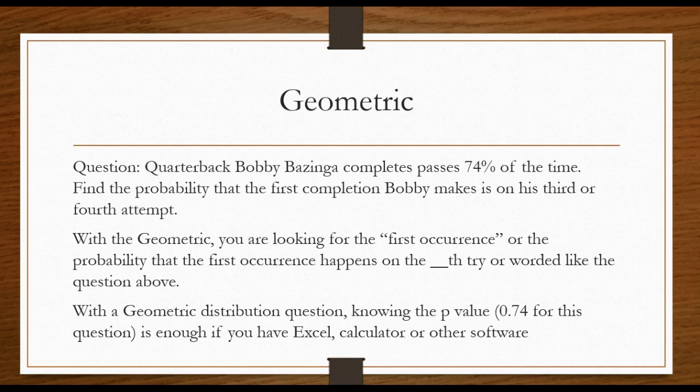Find the probability that the first completion Bobby makes is on his third or fourth attempt, or find the probability the first completion is on his second attempt. With the geometric you're looking for the first occurrence, or the probability that the first occurrence happens on the nth time, or the third time, or the second time.